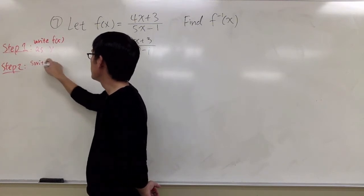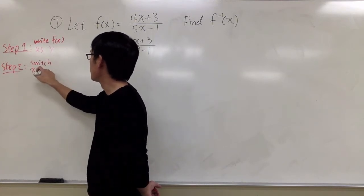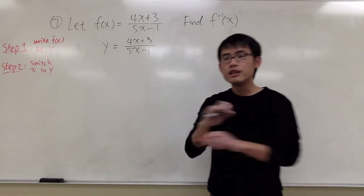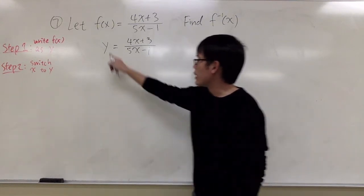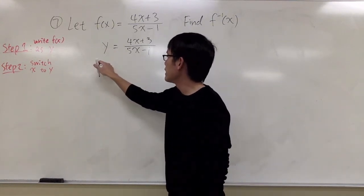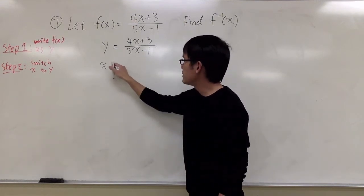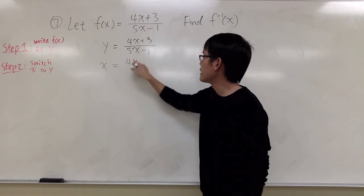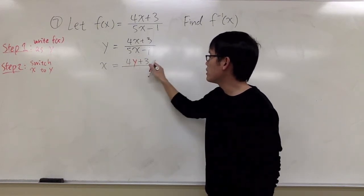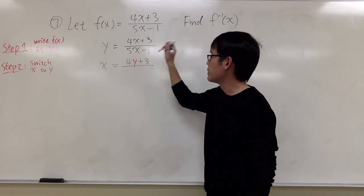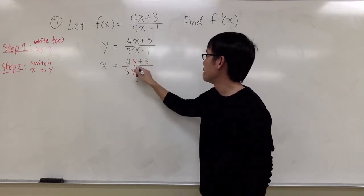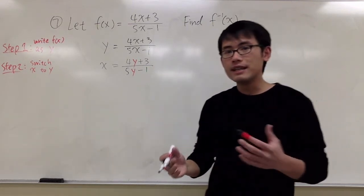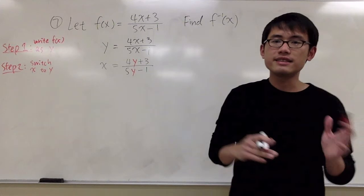That's step number 2. I'll just write this down as switch x to y. Switch x to y, switch y to x, interchange the roles of x and y. Right here I see y, I'm going to write that as x. And right here we have 4x plus 3. It becomes 4y plus 3 over 5x minus 1 becomes 5y minus 1. The most important step for inverse equations is the idea that the x and y switches.